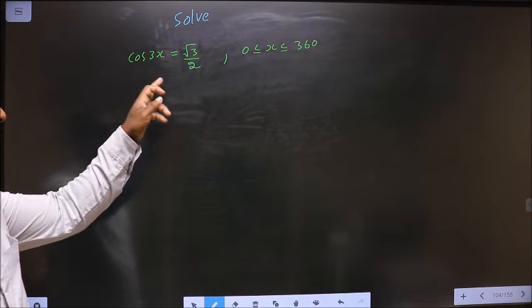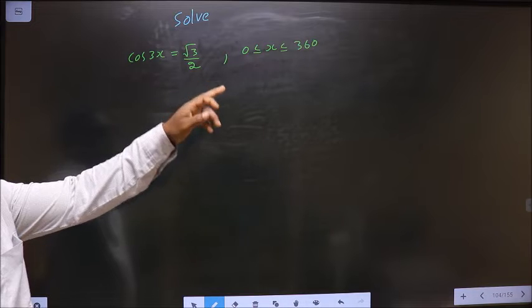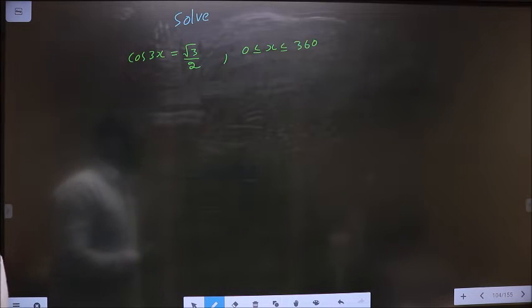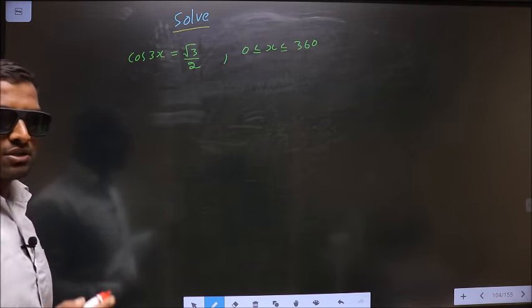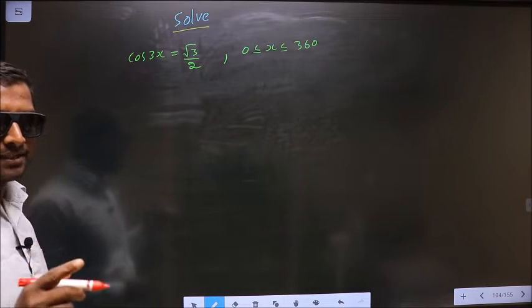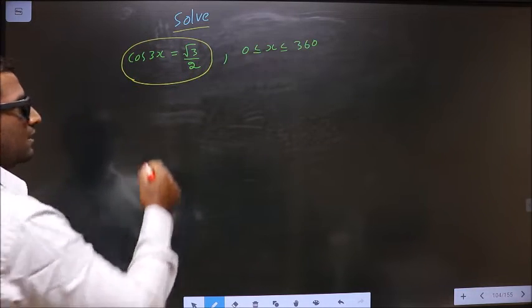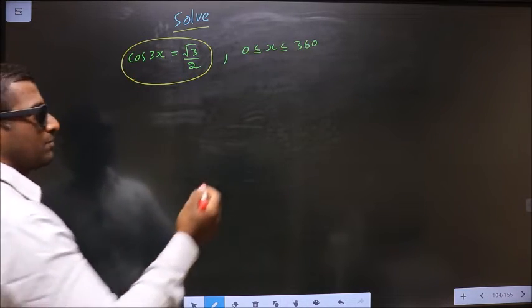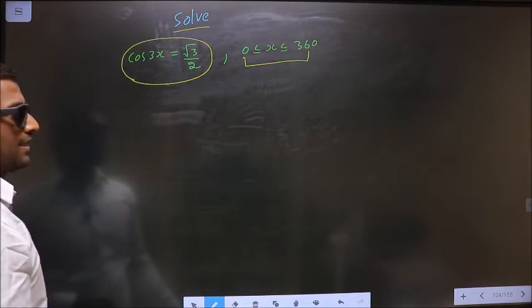Solve cos 3x equal to root 3 by 2 where x lie in the interval 0 to 360 degrees. They told you to solve, so you should find the values for x satisfying this equation and also it should lie in the interval 0 to 360 degrees.